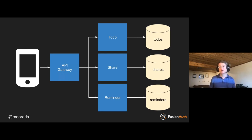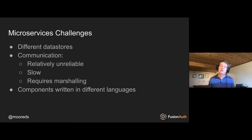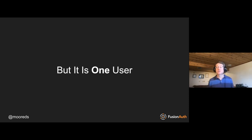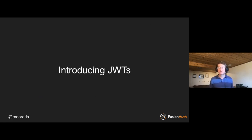But coordination between microservices is more difficult. You have possibly different data stores; communication between components becomes more unreliable, becomes slower, and requires marshaling and unmarshaling, because you're not passing bits of memory or pointers. Instead you're turning things into gRPC or JSON or some other data format, and components can be written in different languages. But the honest truth is there's still one user — one client that wants to interact with your application — so you need some way to represent that user to all components. That is what JSON Web Tokens can help with.